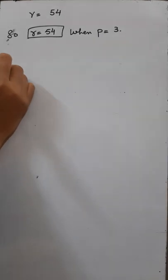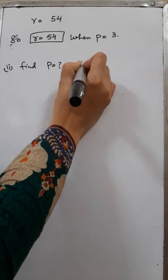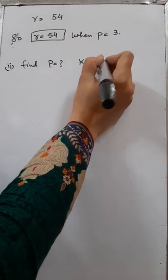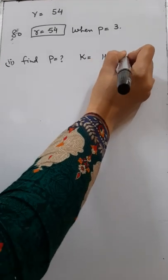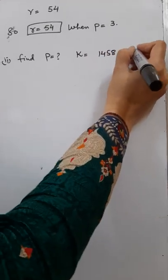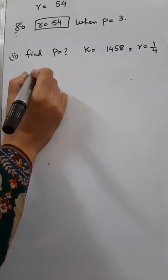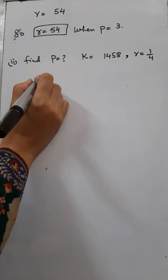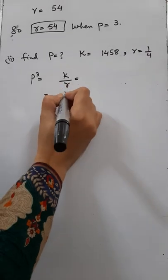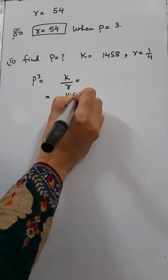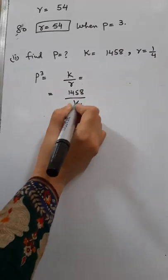Now for the second part, find P. We need to find P, and the value of K is already known — it's the constant ratio we already found. The given value of R is 1/4. So to find P, use equation number 3: P³ equals K by R. Put in the value of K as 1458, and R is 1/4.